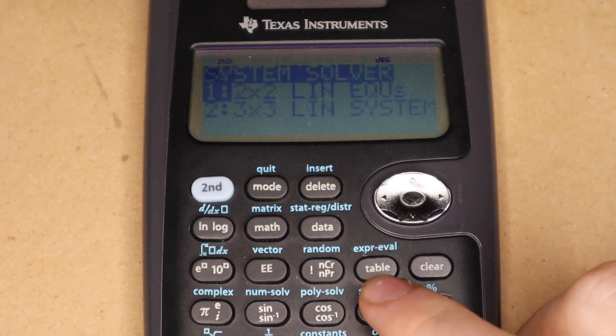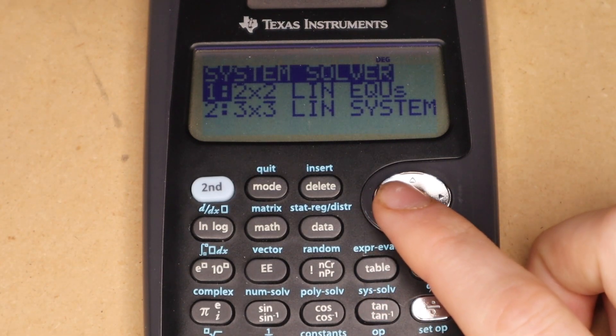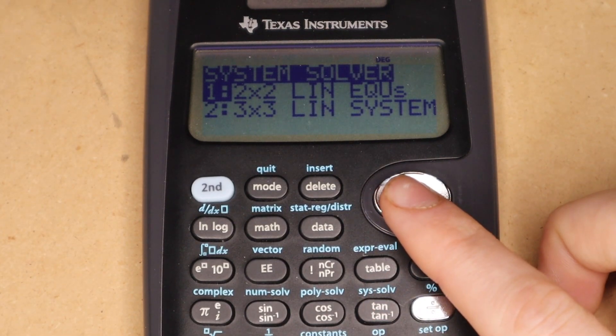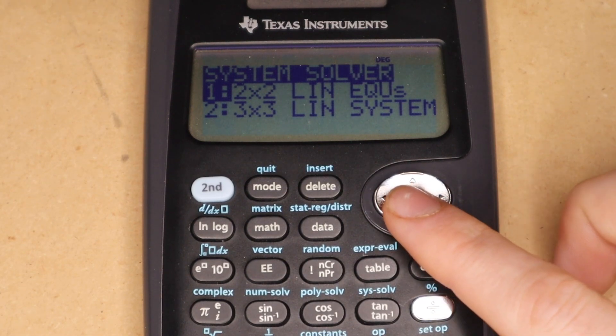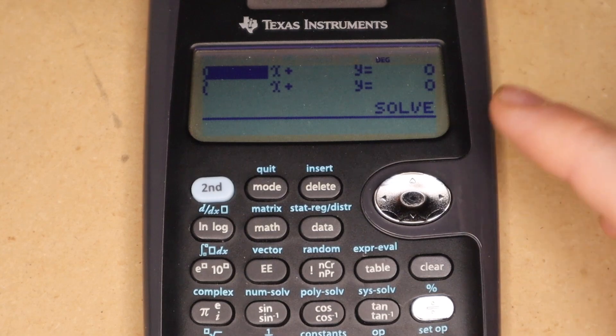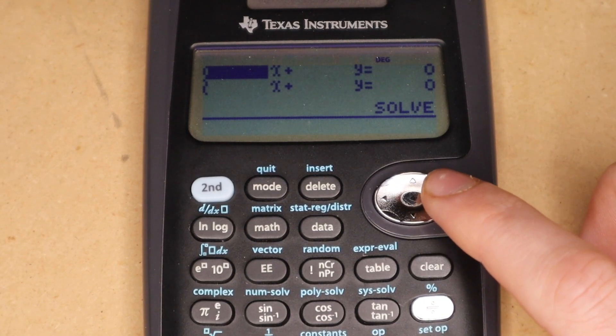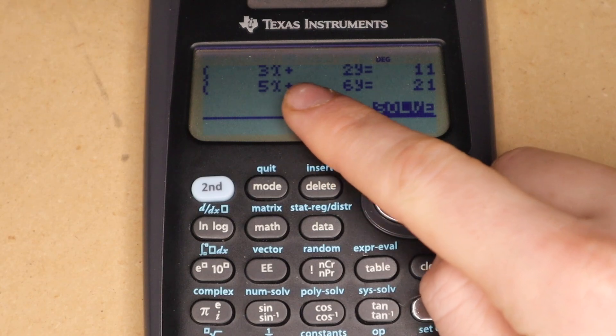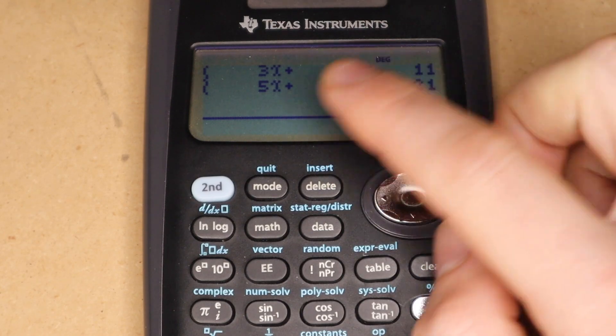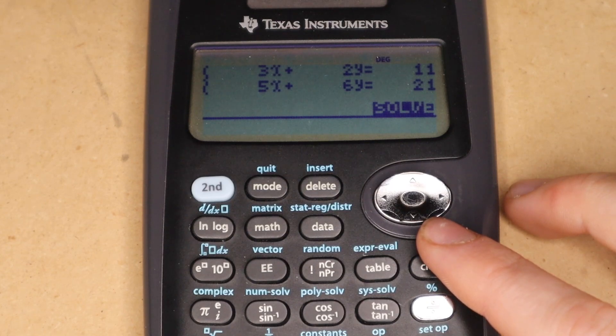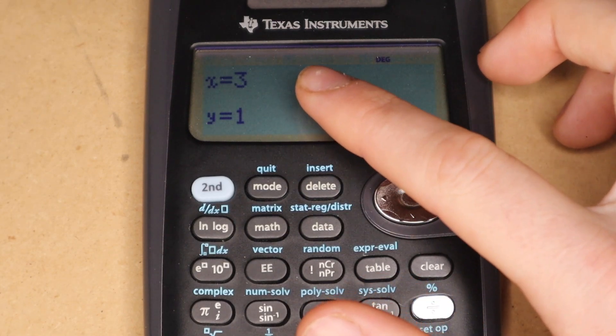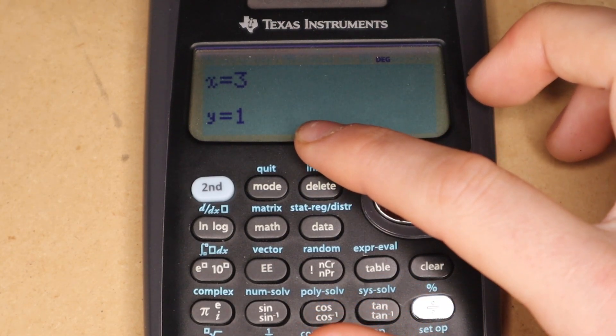There's also a menu for solving linear systems of equations. So this can either handle two equations with two unknowns, or three equations with three unknowns. If we select the first option here, we get this nice template, and you can enter your equations in this form. For example, here I have 3x plus 2y equals 11, and 5x plus 6y equals 21. And then I'll press enter to solve, and it gives me my x value of 3 and y value of 1.